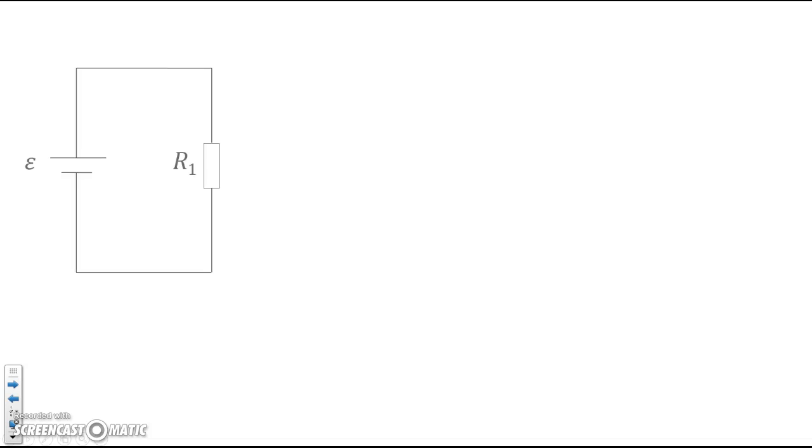Let's say we have a circuit that looks like this. There's a battery or a cell, the EMF is epsilon, this is the Greek letter, and the resistance of this one resistor is R1. What happens when you connect another resistor, R2, in parallel with R1, how does that impact the circuit?